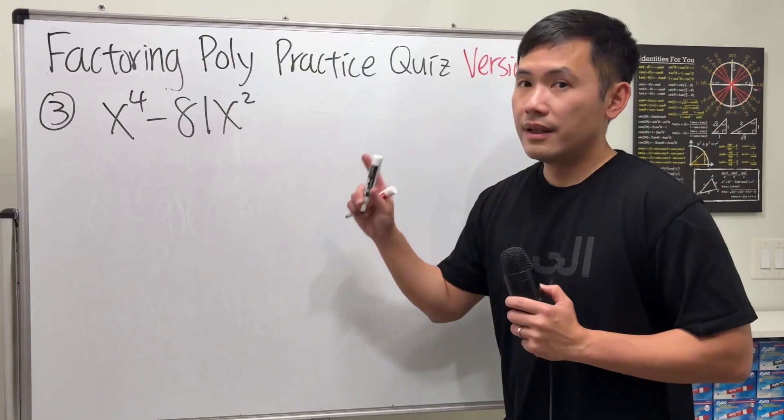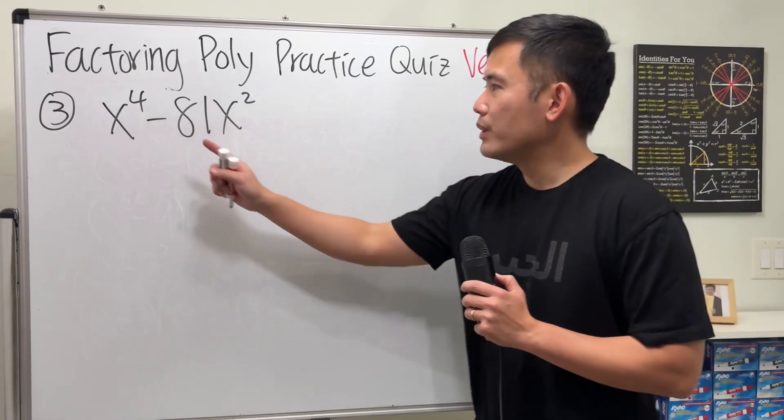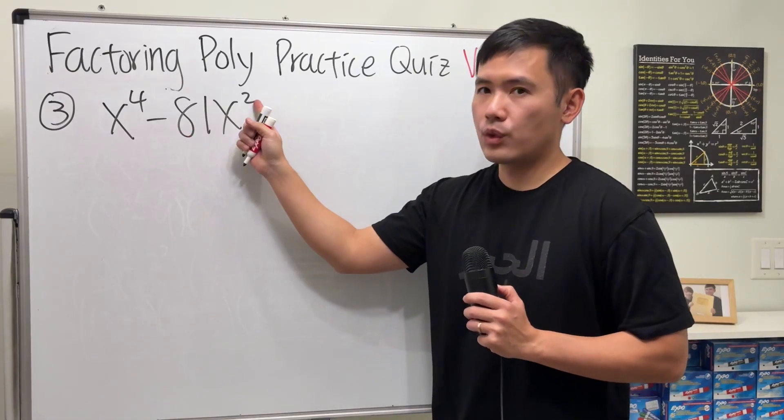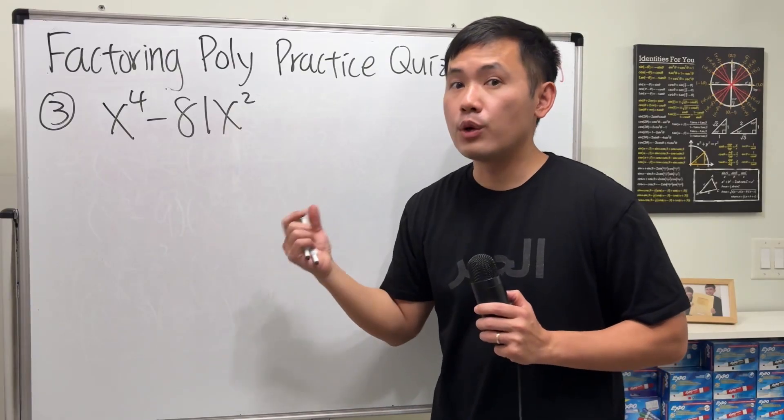Now, number 3, it kind of looks similar to number 2, right? But here, we have x to the fourth power minus 81x squared. Because we have this x squared, we can actually factor out a common factor.